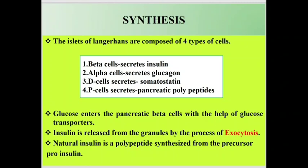In beta cells of the pancreas, glucose enters with the help of glucose transporters. The secreted insulin is released by the process of exocytosis. Insulin is synthesized from pro-insulin.